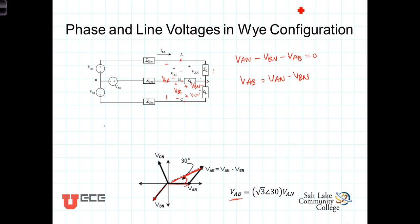Notice our intuition is right, at least our intuition will lead us part of the way. VAB, the line voltage, the voltage from here to here, is greater than the phase voltage.